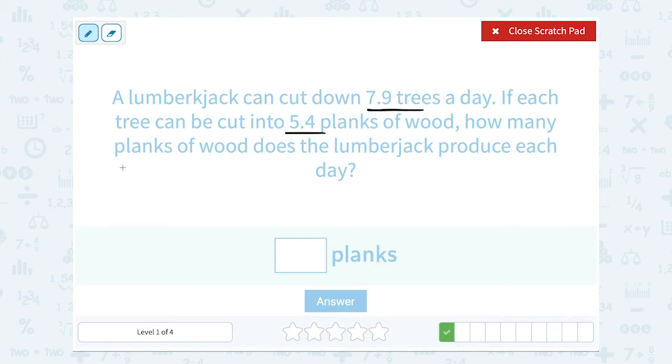So we're going to say 7.9 times 5.4. Now when you're multiplying with decimals, you can ignore the decimal for a minute, think of this as just 79 times 54, and then we'll handle that decimal in the end in our answer.